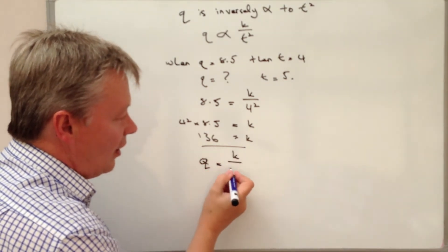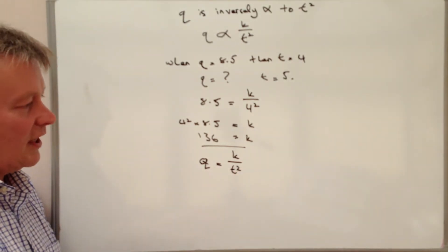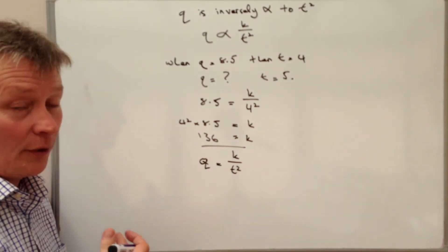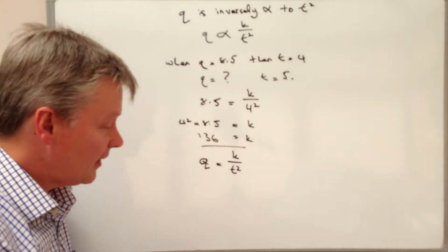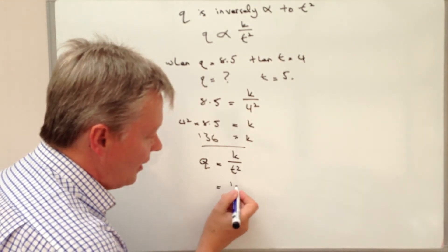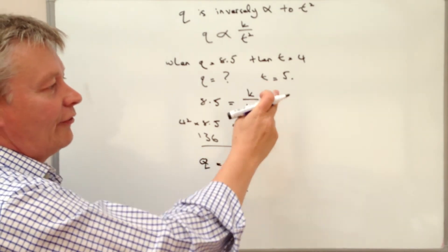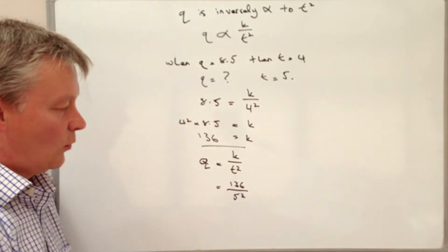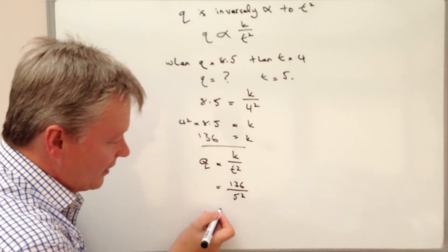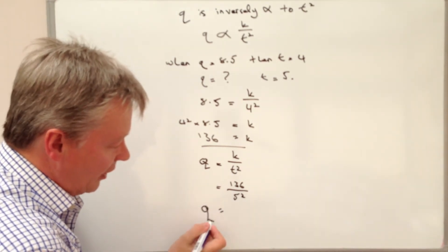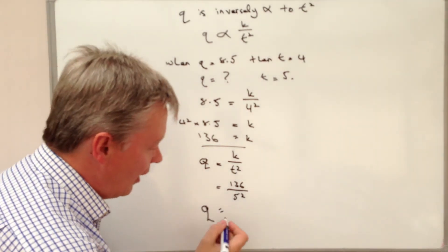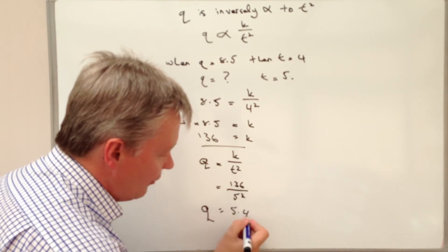And in this particular case now, our value of K we know is 136, so Q is 136, and T is 5, so it's going to be 5 squared. And if I pop that into my calculator, that will give me a value of Q of 5.44.